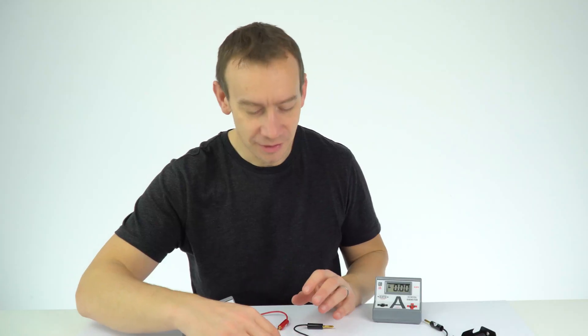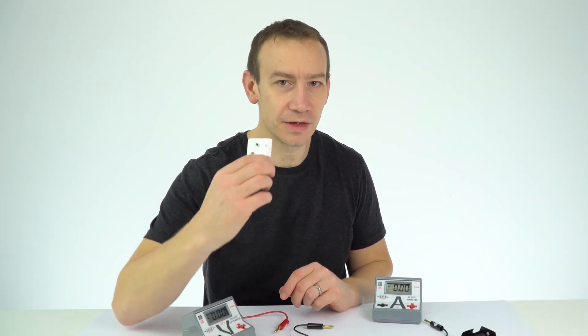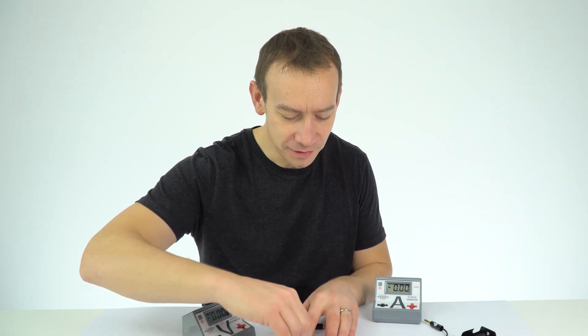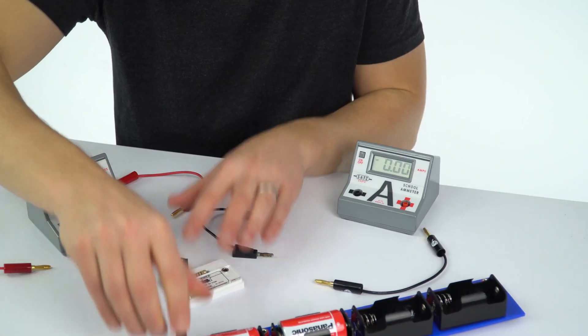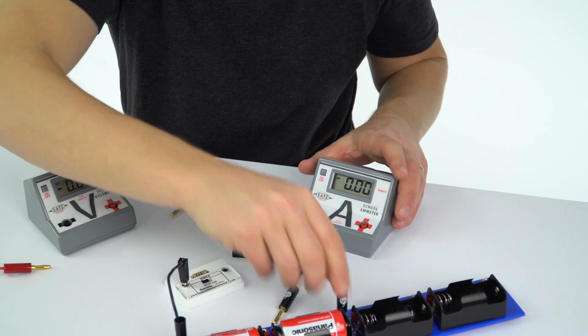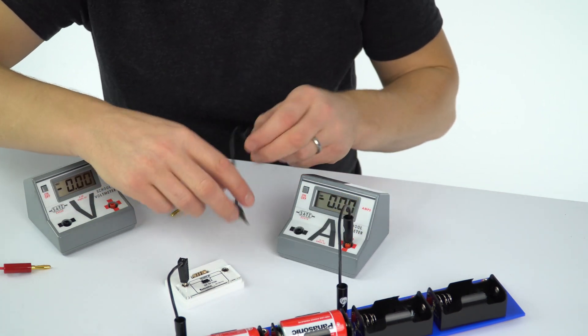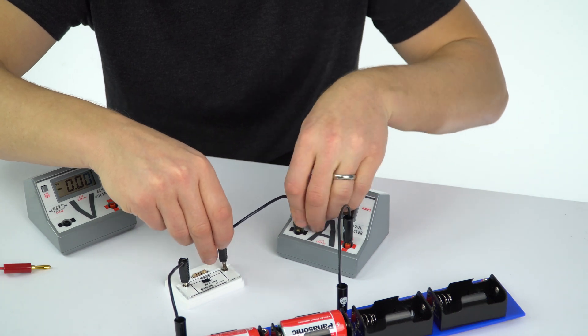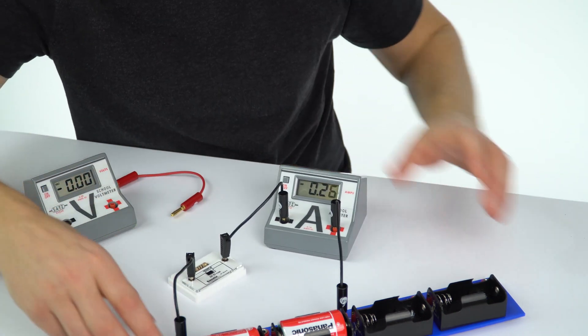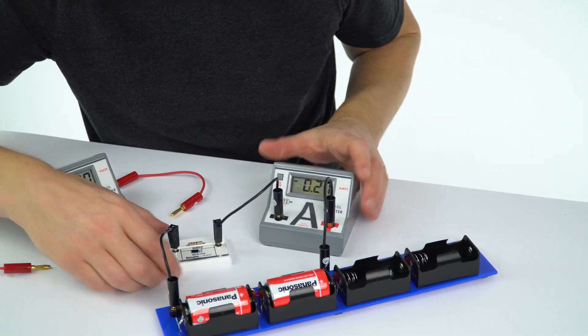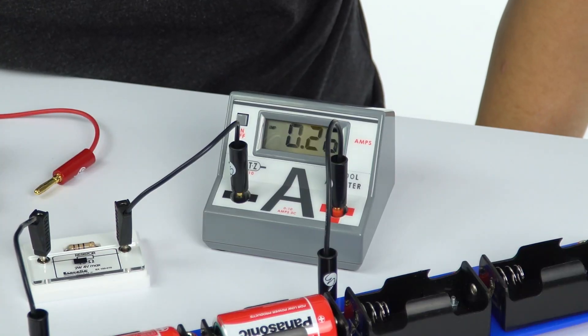The first thing I'm going to do is connect one of these resistors into the circuit with the ammeter. This allows me to check that the ammeter is working, that all of the wires are working, and that this resistor is working as well. We can see when I do that we've got a value of 0.26 or 27 amps.